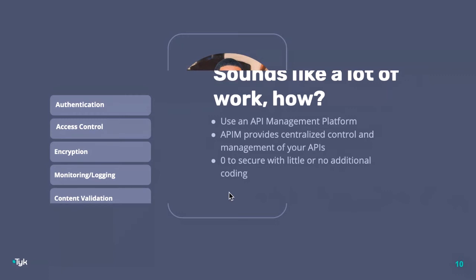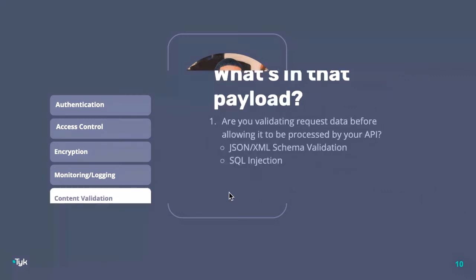Another key component is content validation. What's in that payload? Are you validating request data before allowing it to be processed by your API? You've heard of SQL injection, where someone can insert SQL commands and pass those to an API and cause havoc on your system. When you're receiving request data, you should be analyzing it, validating the payloads in those requests, to make sure you aren't getting faulty data that can wreak havoc on your system.